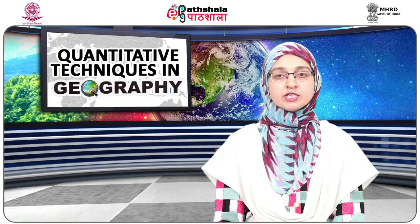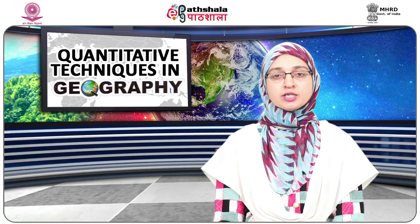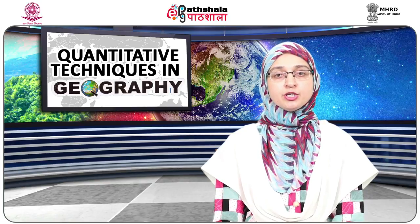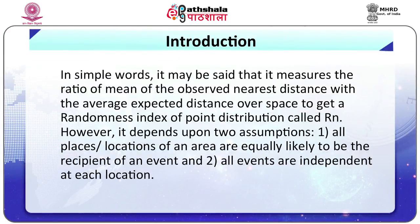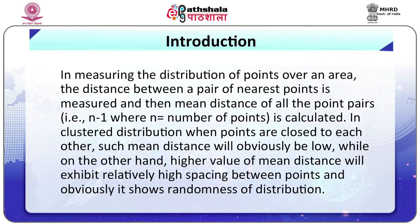In the study of spatial distribution of settlements, NNA measures the distances between each nearest point and compares these with the expected values for a random sample of points with complete spatial randomness. In simple words, it measures the ratio of the mean observed nearest distance with the average expected distance over space to get a randomness index of point distribution called Rn. The distance between a pair of nearest points is measured and then the mean distance of all point pairs (N-1, where N equals number of points) is calculated.